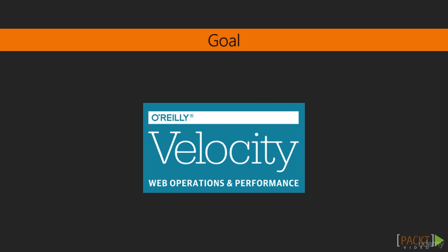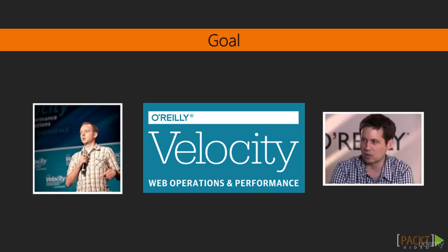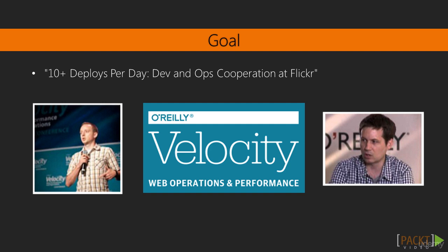Probably the best example of this was in 2009 at the O'Reilly Velocity Conference — for some, this was the birth of the DevOps movement. Paul Hammond and John Allspaw gave a talk called '10+ Deploys Per Day: Dev and Ops Cooperation at Flickr,' where they talked about how they did deploys at Flickr. Doing 10 or more deploys a day in 2009 was complete and utter insanity. Organizations at that time were happy if they were doing deploys quarterly, or monthly if you were really amazing.